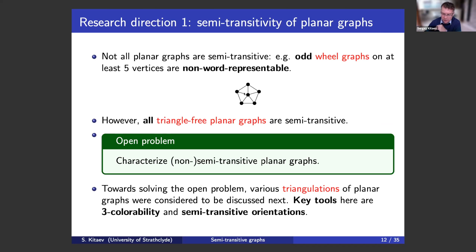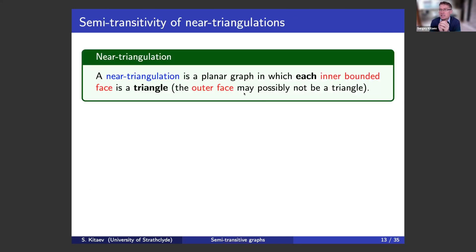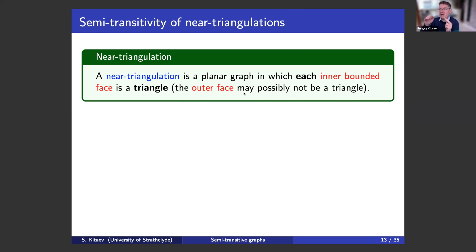Let me give one definition: near triangulations. A near triangulation is a planar graph in which each inner bounded face is a triangle. The outer face may possibly not be a triangle. A face is a bounded region, and a triangle is a face bounded by three edges. So basically, we care about internal faces, but outside we don't care. We could have as many edges as possible on the outer boundary.